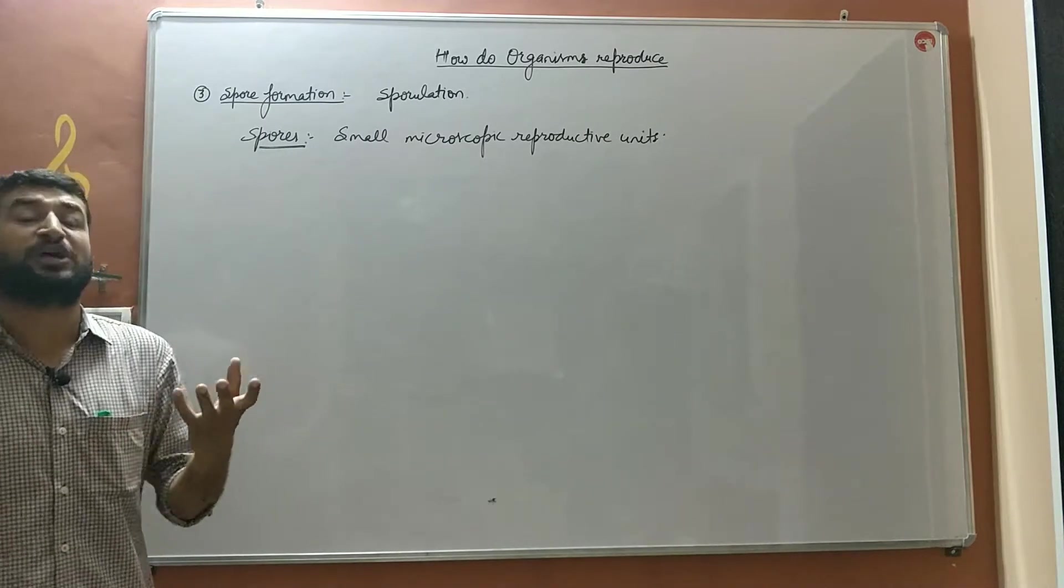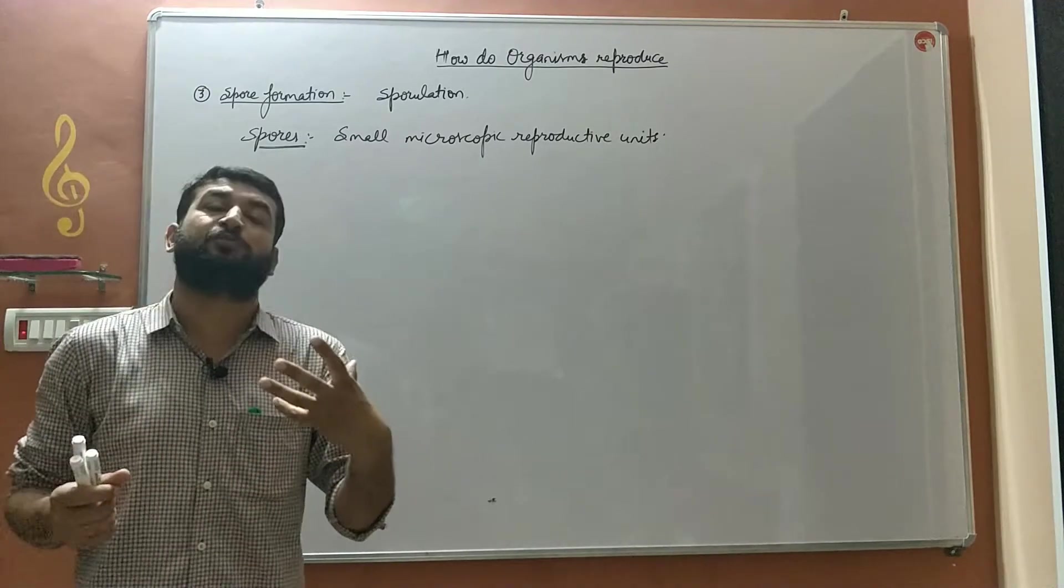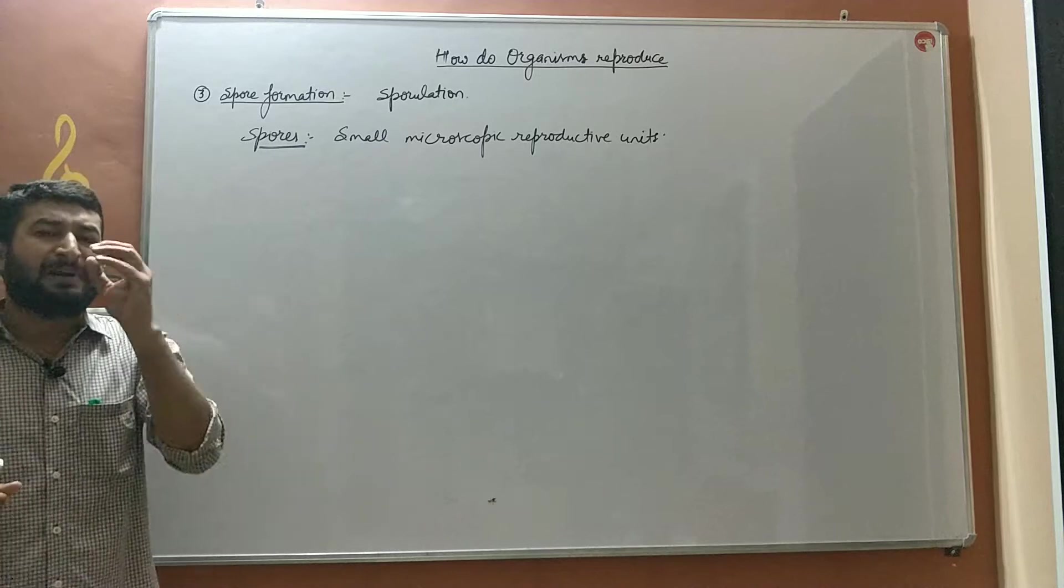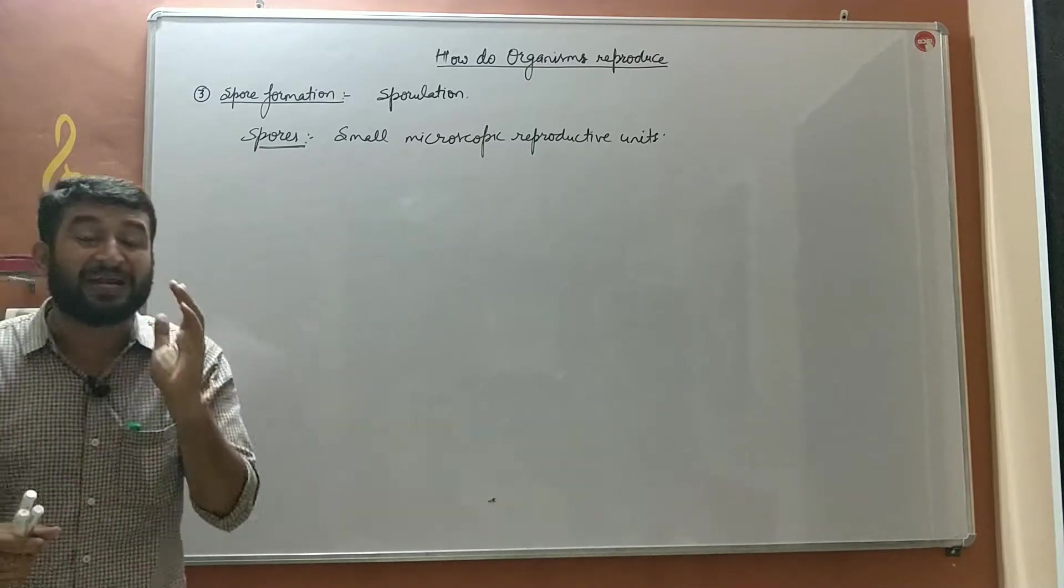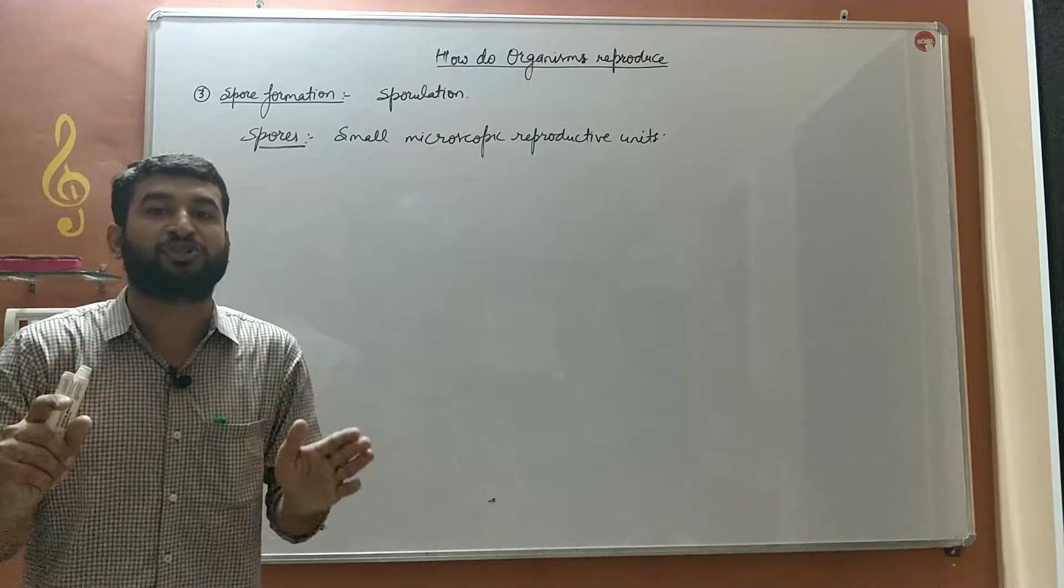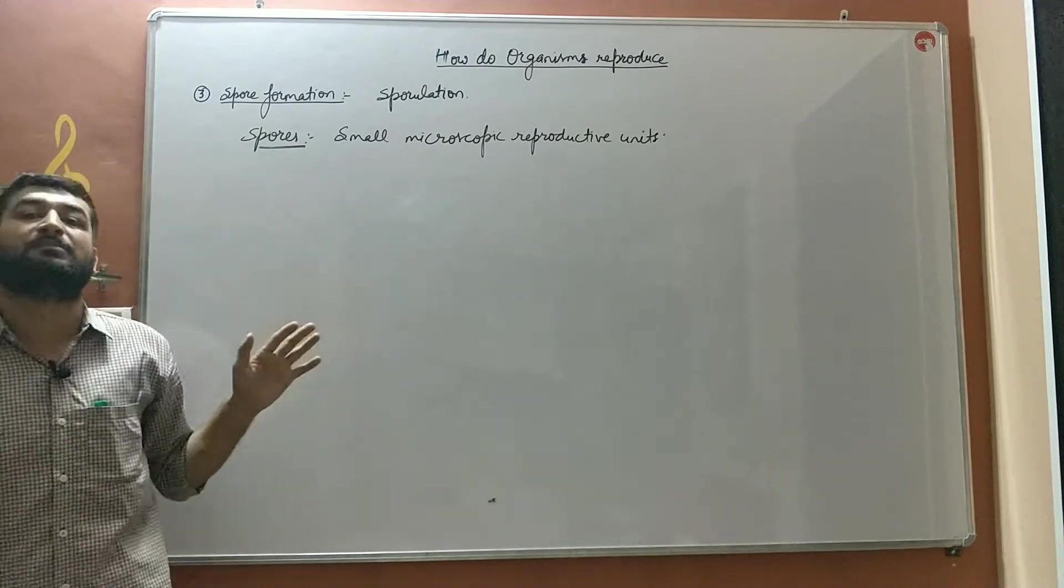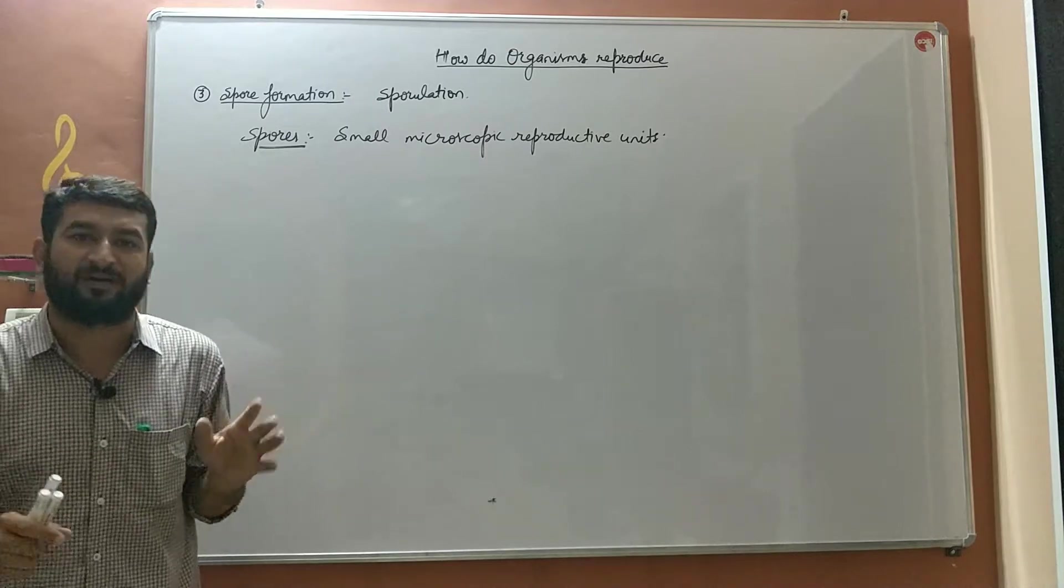Some spores are motile in nature. Those type of spores are called zoospores. The bacterial spores which are known as endospores are the most resistant spores, that is they resist maximum to the unfavorable conditions whensoever they occur.